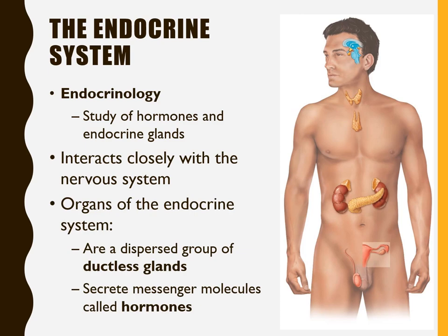All of the organs of the endocrine system are dispersed throughout the body and are considered ductless glands. Unlike exocrine glands that secrete through ducts to a surface, these ductless glands produce and secrete messenger molecules called hormones. The hormones travel through the bloodstream to whatever effector organ they need to reach — there are no ducts, just a vascular supply to get into the blood.